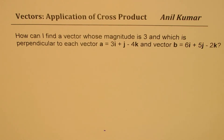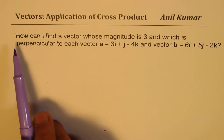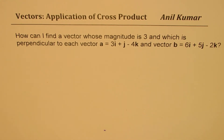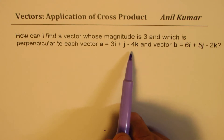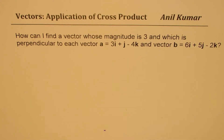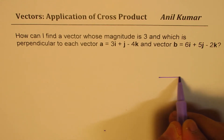I am Anil Kumar. Let me thank all the participants of the website for posting excellent questions. Here is my solution to your question — it is regarding vectors. We are looking for a perpendicular vector of magnitude 3. The question is: how can I find a vector whose magnitude is 3 and which is perpendicular to vector a = 3i + j − 4k and vector b = 6i + 5j − 2k?